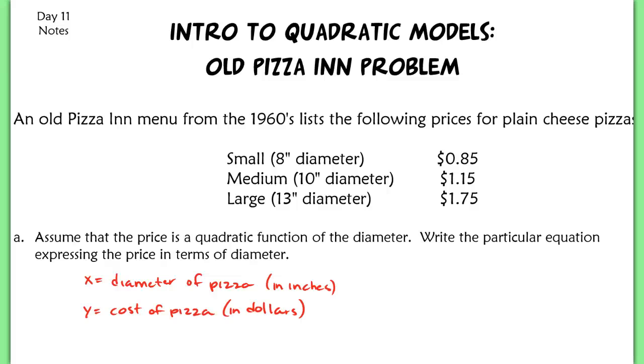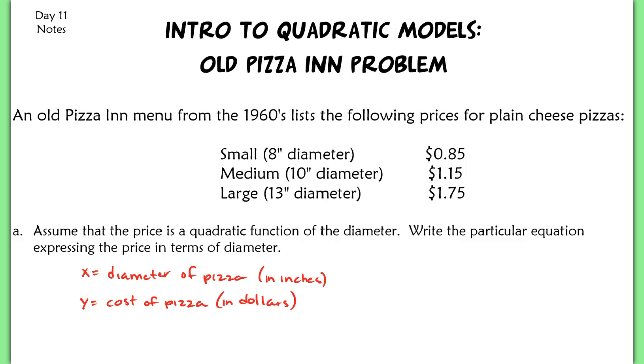This lesson is for our day 11 notes. We're going to be working with a quadratic model problem, our old Pizza Inn problem. Here we've got an old Pizza Inn menu from the 1960s, and the following prices are listed for a plain cheese pizza: a small 8-inch diameter pizza for $0.85, a medium 10-inch diameter for $1.15, and a large for $1.75.